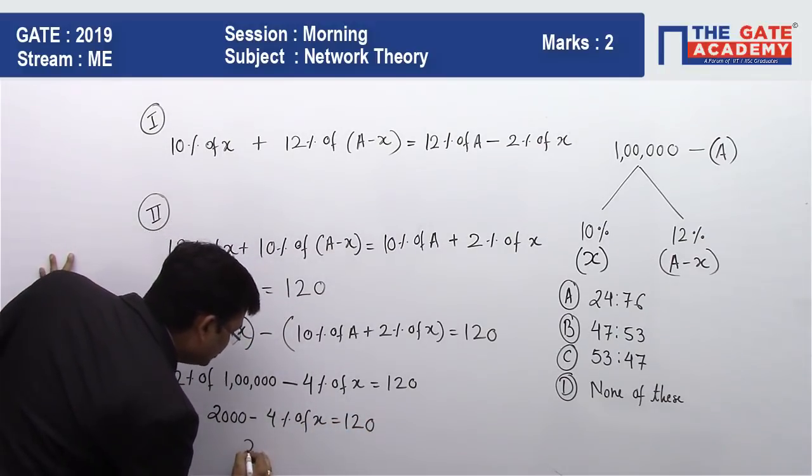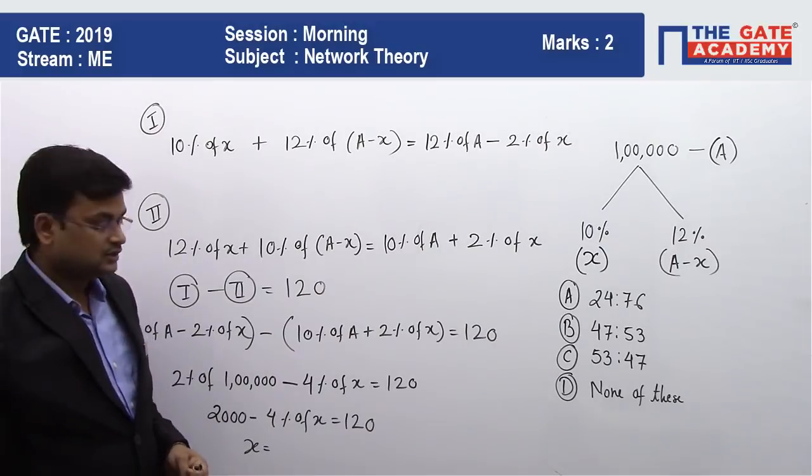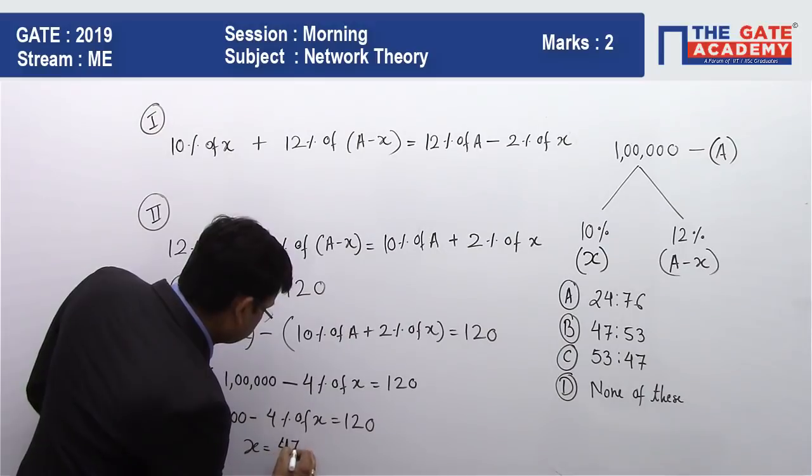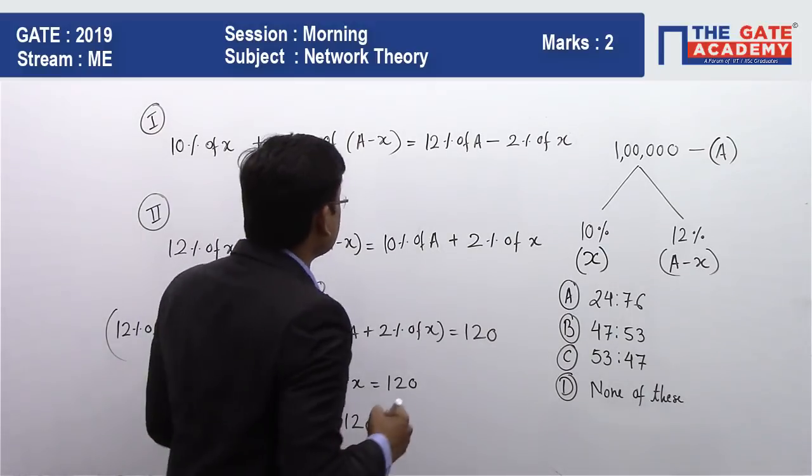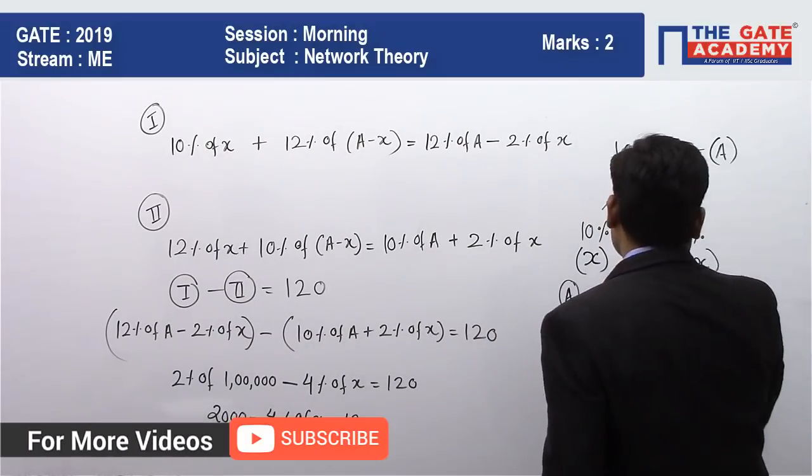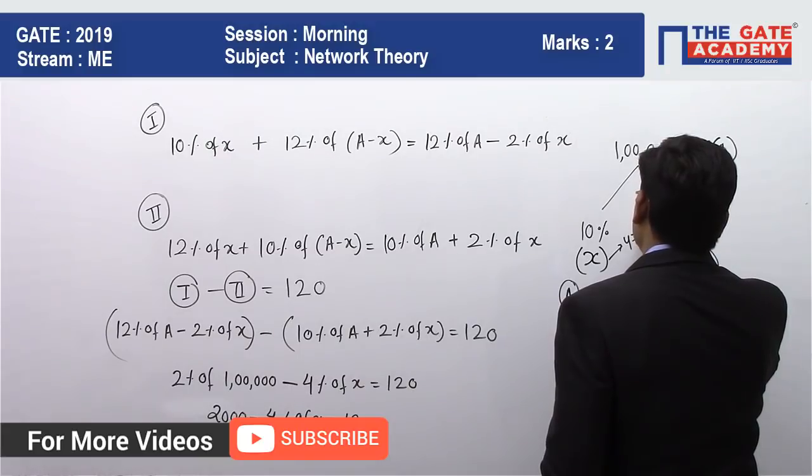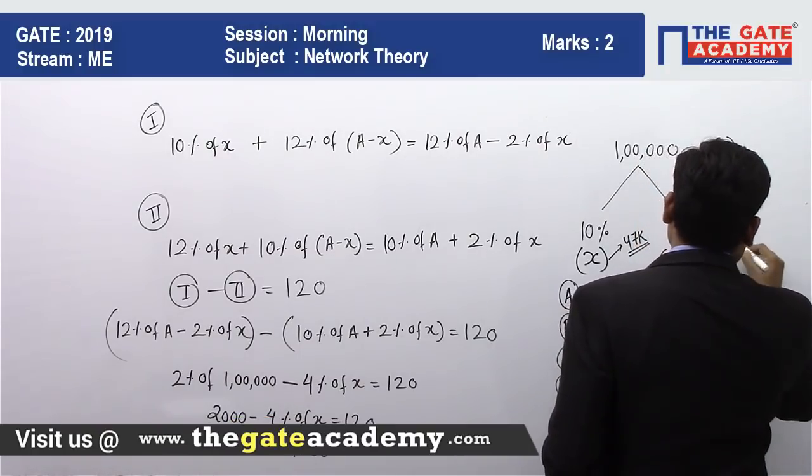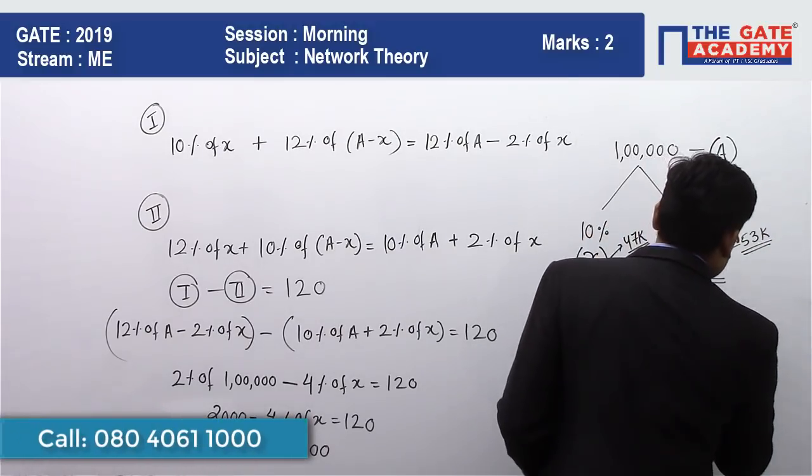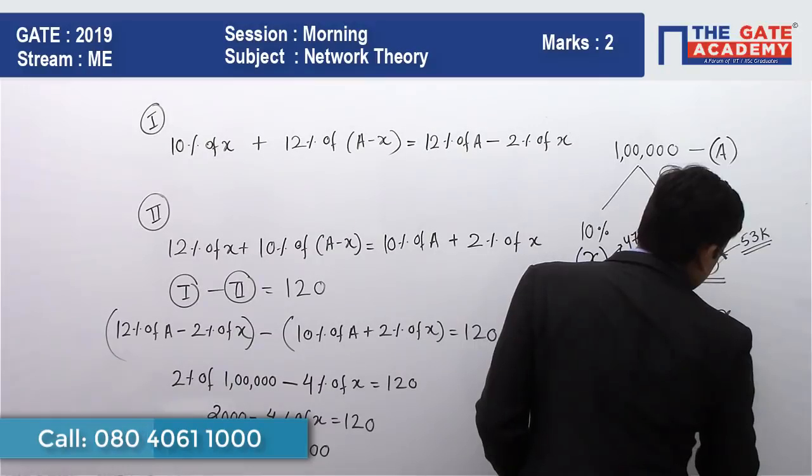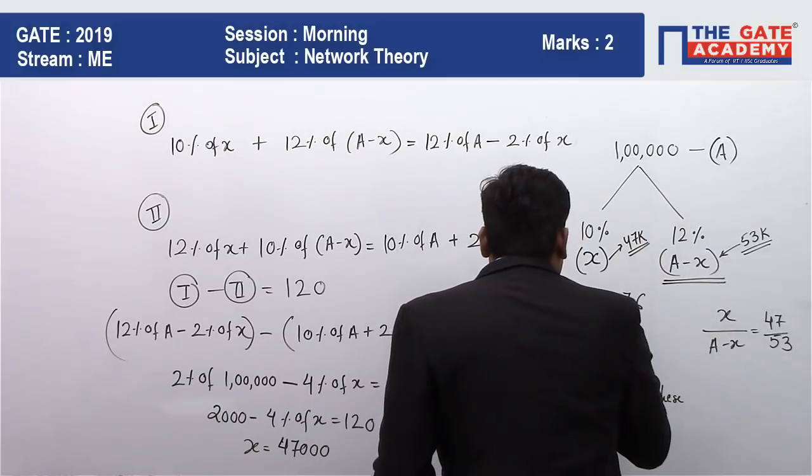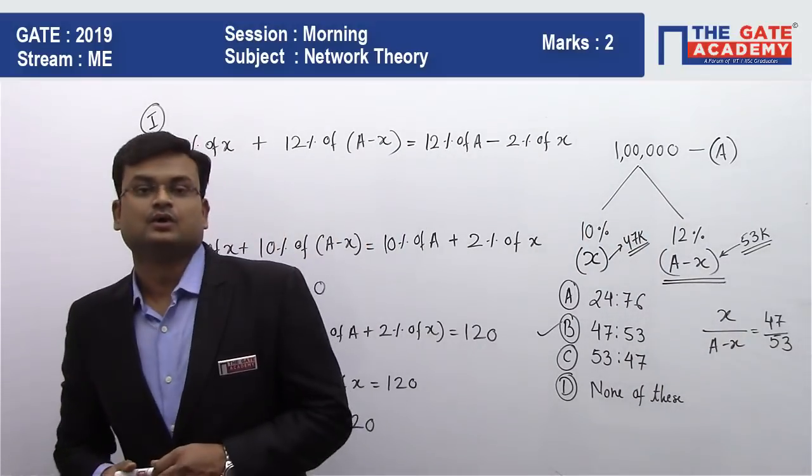Solving for x, we get x equals 47,000. If x is 47,000, then A minus x equals 53,000. So the ratio is 47:53. Therefore, my answer is option B.